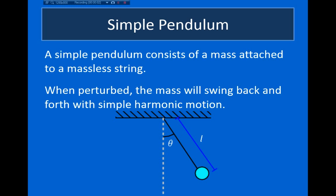Hello and welcome back. In this video, I want to look at some other systems that experience simple harmonic motion, and the first one I want to look at is the simple pendulum. The simple pendulum is what you get when you hang a mass from a string and then displace the mass slightly from the vertical. In this case, the mass will swing back and forth, and this motion will be simple harmonic.